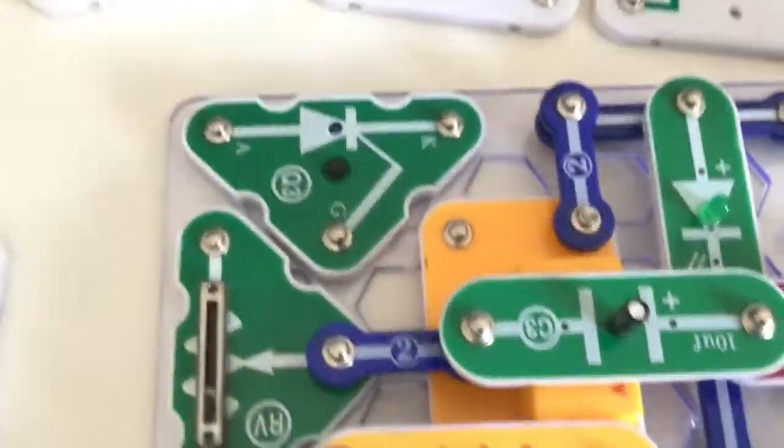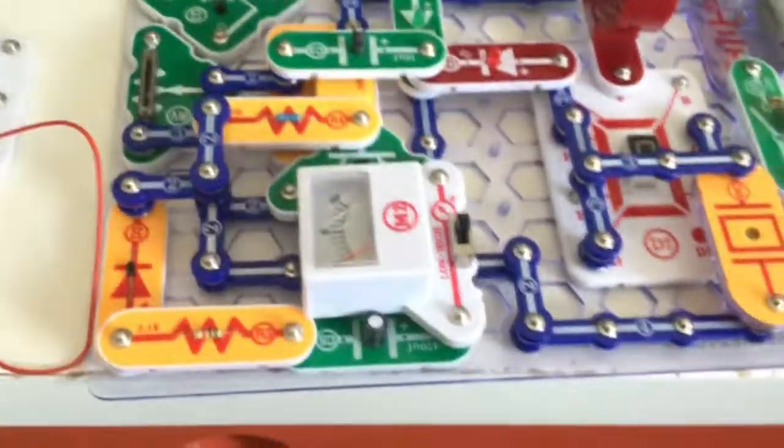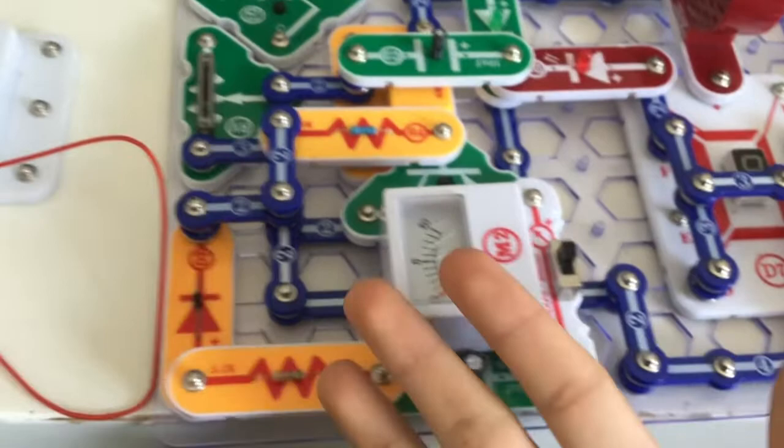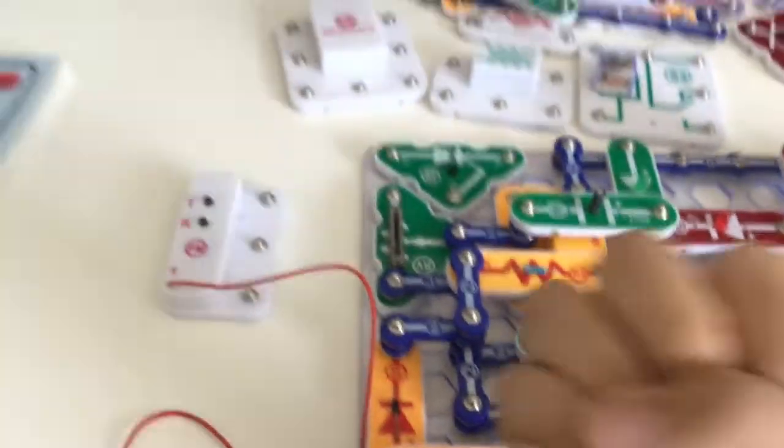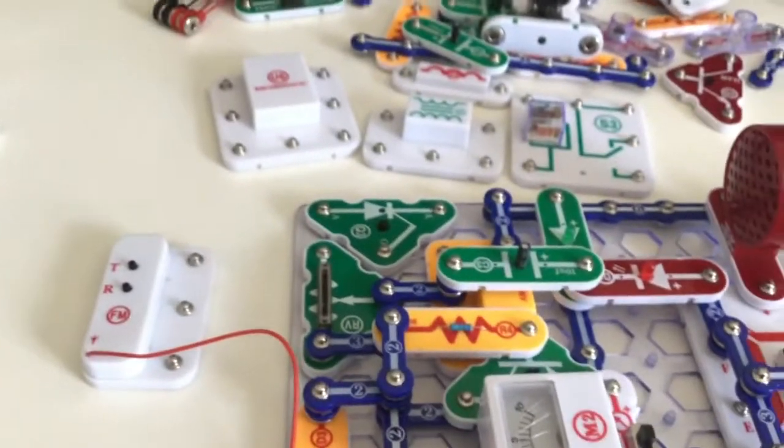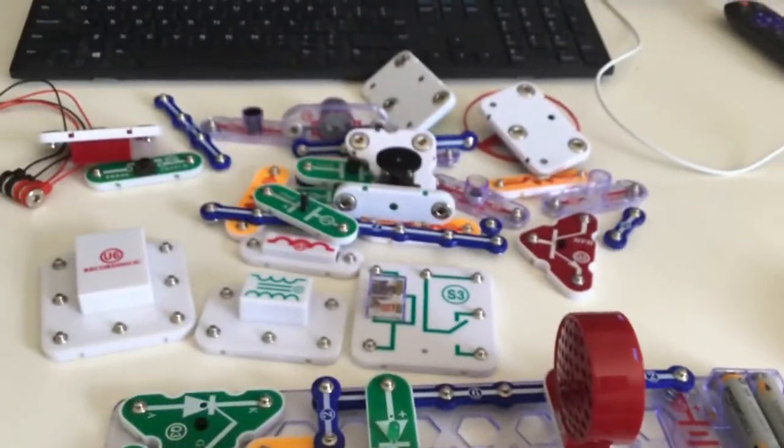It also includes an SCR transistor right after Q1 and Q2 of Classic, five-in-one and five snap wires, three two snap wires, and various other parts of SnapCircuits Junior and Classic.